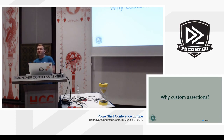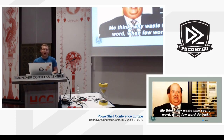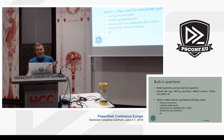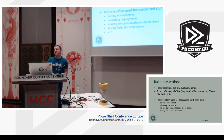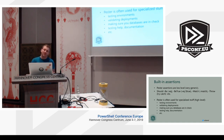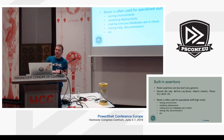Why even bother with custom assertions? Or as Kevin would say: 'me think why it waste time say lot words when fewer do trick.' Because Pester already has assertions — there are about 20 of them, most are pretty generic. You have Should Be, which wraps EQ; Should BeTrue that wraps EQ true; Match for regular expressions; Throw that does try-catch; and so on.